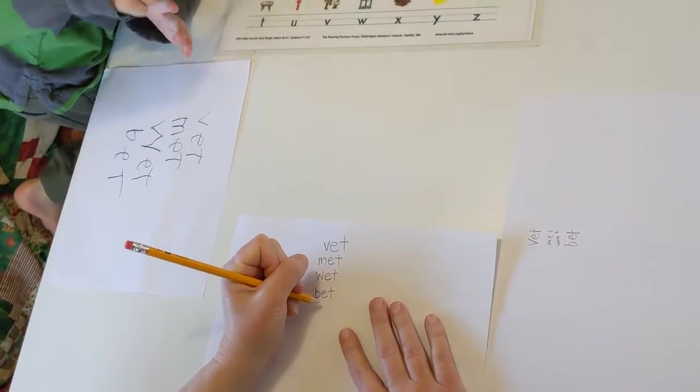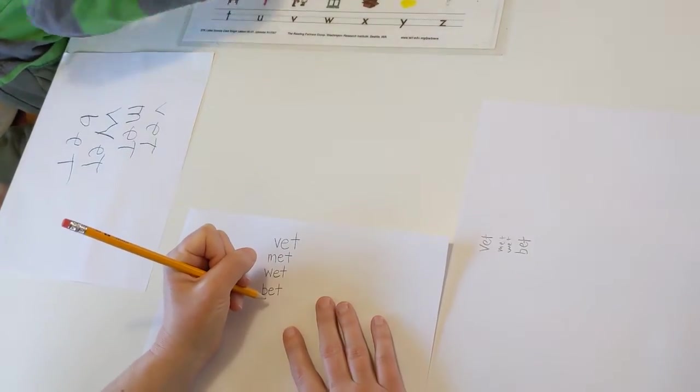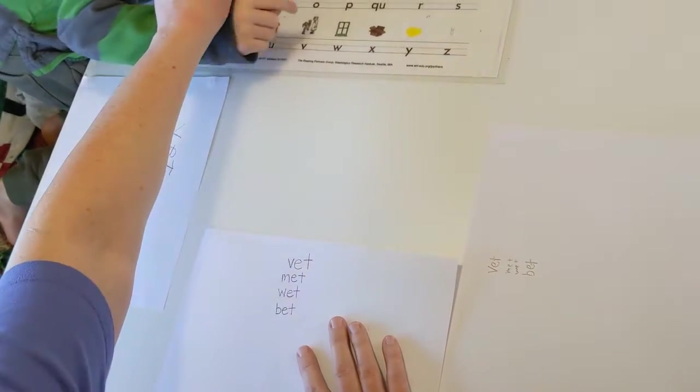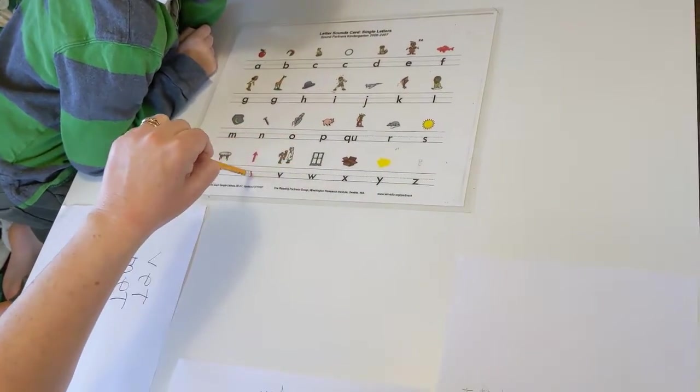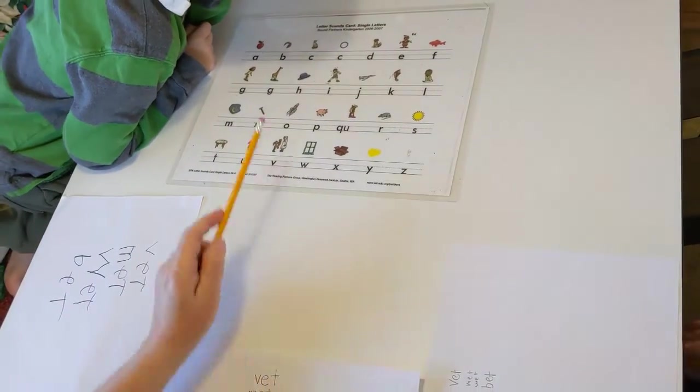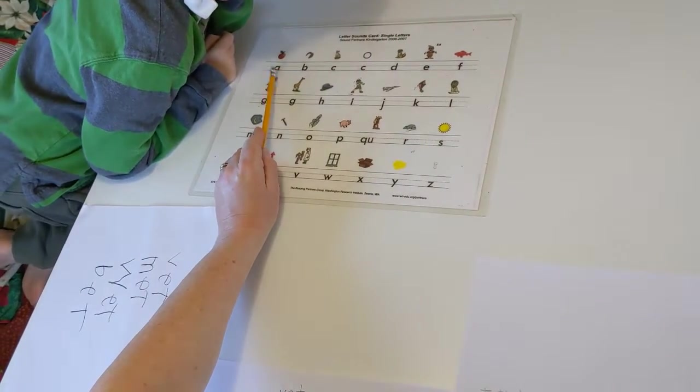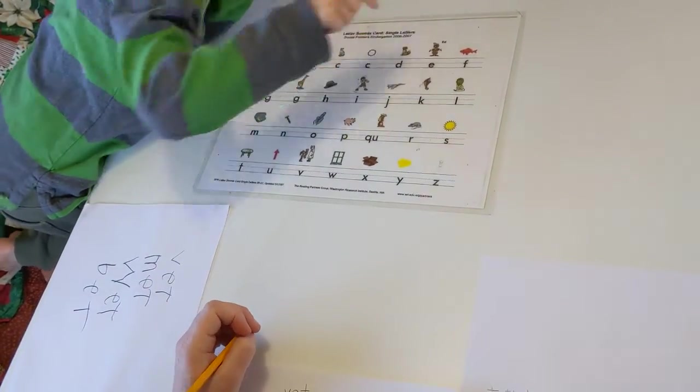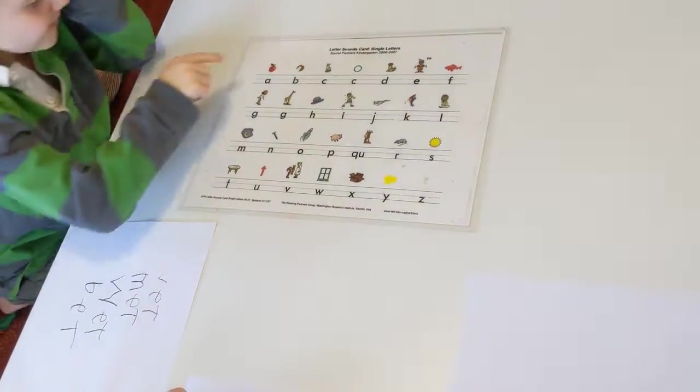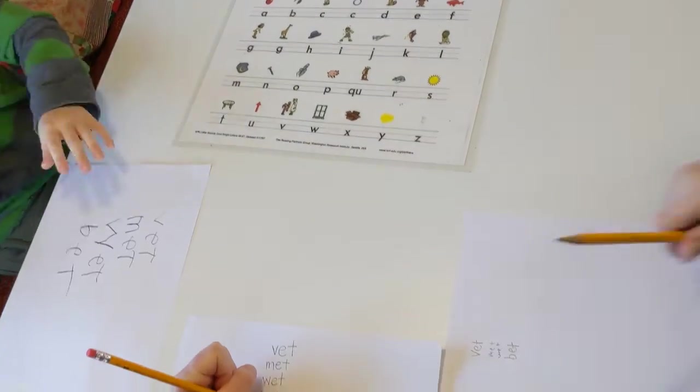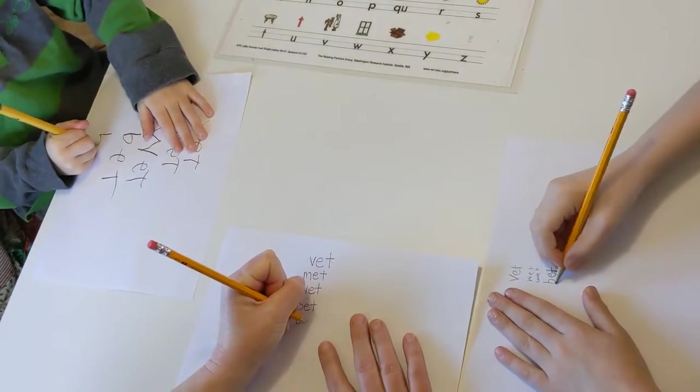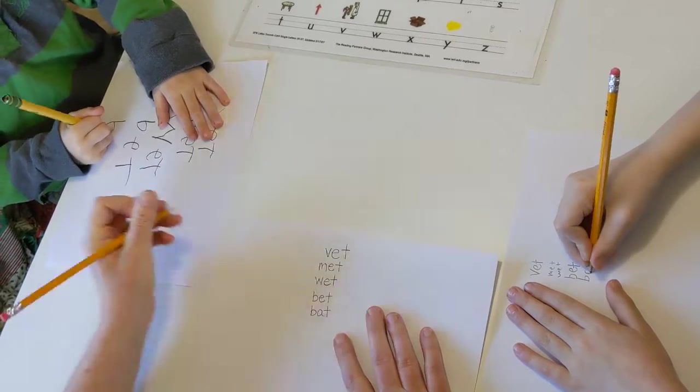The middle has to always be a vowel. A, E, I, O, U. Nope. A, E, I, O, or U. What do we do? Do you want to do an A? We already have bet. Oh, A. Alright, we're going to change the E to an A. And what's the word, Xavier? Bat.